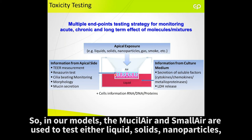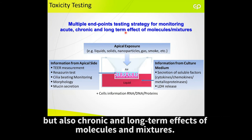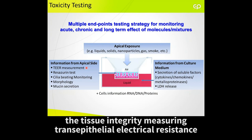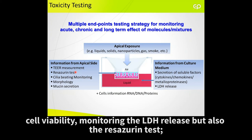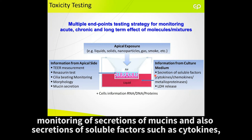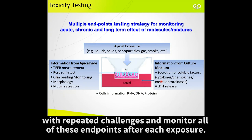An air-liquid interface model, such as MucilAir or SmallAir, is used to test either liquid, solid, nanoparticles, gas, or smoke. We developed a multiple endpoint testing strategy, not only to monitor acute but also chronic and long-term effects of these molecules or mixtures. We monitor a panel of endpoints to assess tissue integrity — measuring transepithelial electrical resistance — cell viability by monitoring LDH release, but also the resazurin test, effect on cilia such as monitoring cilia beating frequency, morphological modifications, modulation of secretions of mucins, but also secretions of soluble factors such as cytokines, chemokines, and metalloproteinase. And none of these endpoints are destructive, meaning you could apply a strategy with repeated challenge and monitor all these endpoints after each exposure.